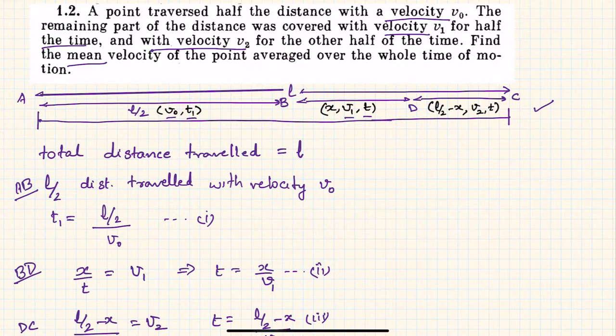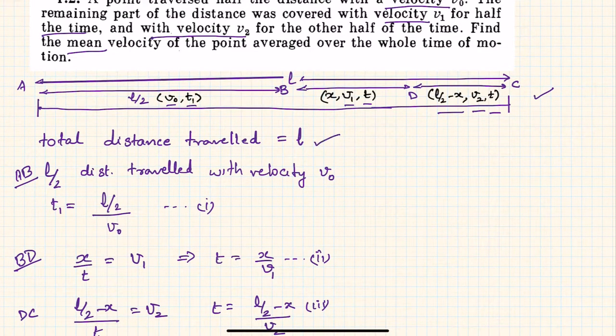journey is l/2 minus x (this is the distance) and the velocity was v2 and time taken was same as the previous half, that is t. So total distance traveled is l.